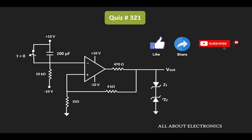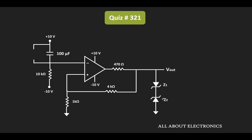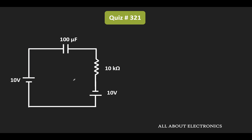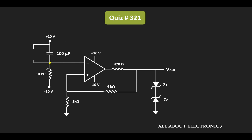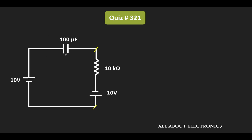At t equal to 0, this switch gets opened and the capacitor starts charging. Let us see this portion of the circuit separately. The voltage between these two nodes is Vn. If we say the voltage across the capacitor is Vc, then Vn is equal to 10V minus Vc. We will first find Vc, then use it to find Vn, and from that determine time t1.